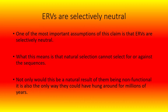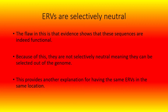One of the most important assumptions of this claim is that ERVs are selectively neutral — meaning that natural selection cannot select for or against the sequences. Not only would this be a natural result of them being non-functional, it would also be the only way they could have hung around for millions of years. The flaw in this is that evidence shows these sequences are indeed functional. Because of this, they are not selectively neutral, meaning they can be selected out of the genome, which provides another explanation for having the same ERVs in the same location.